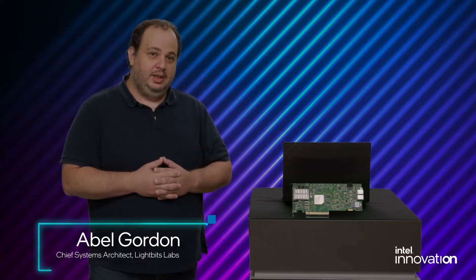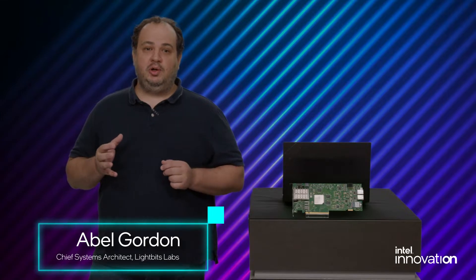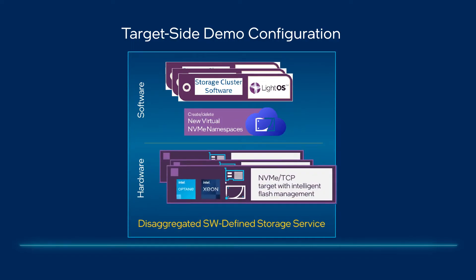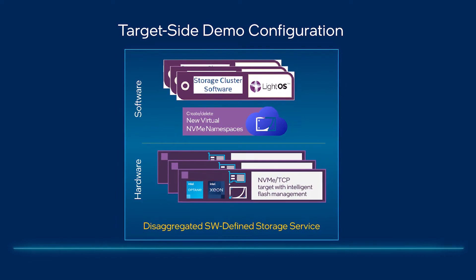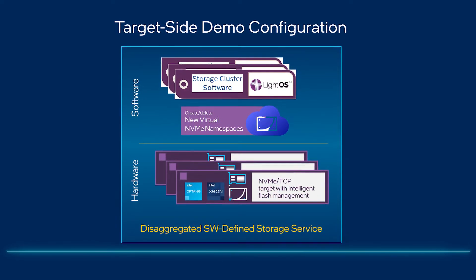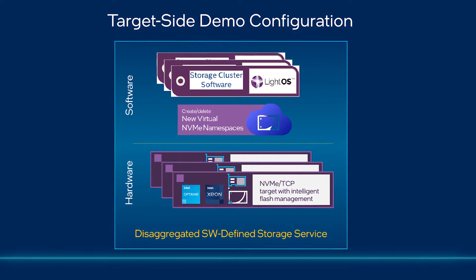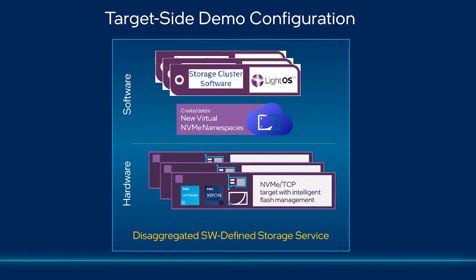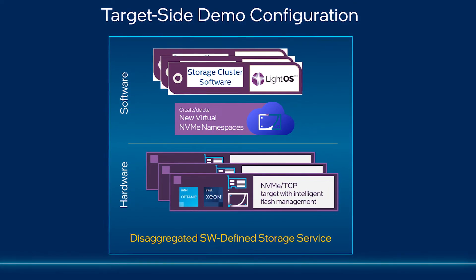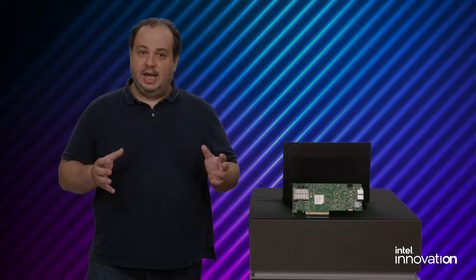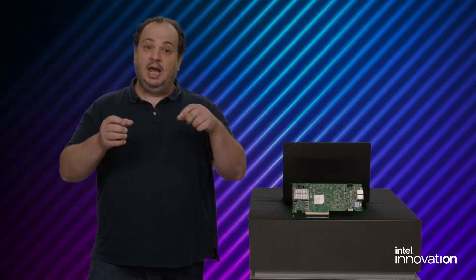Now Abel will describe the target side of the demo. Thanks, Dave. The target side consists of a three-node storage cluster running LiteBit's LiteOS software. The combination of LiteOS software running on Xeon with Intel Optane, Intel Ethernet 800 series NICs, and QLC SSDs allow us to deliver optimized performance. The LiteOS software pools and virtualizes the storage, exposing it to remote hosts as logical NVMe namespaces accessed using NVMe over TCP. LiteBit's CSI plugin is used to seamlessly connect Kubernetes with the LiteOS cluster and the IPU.